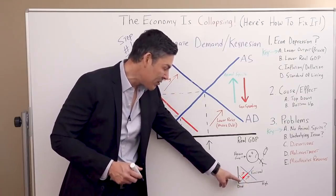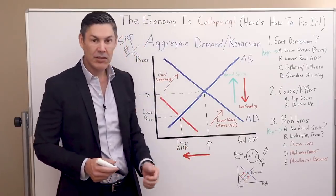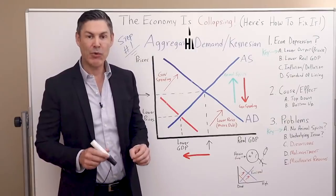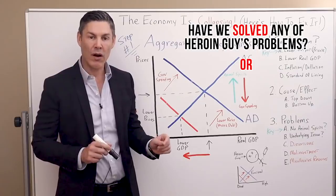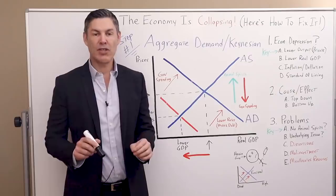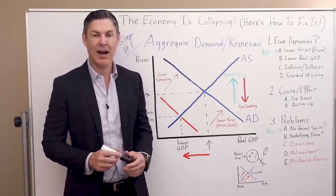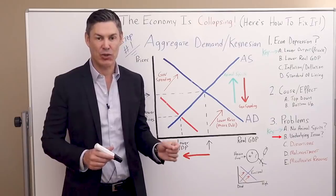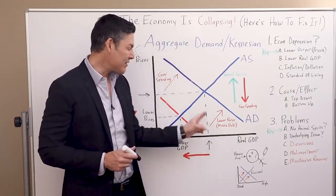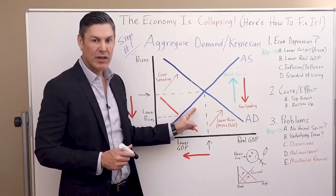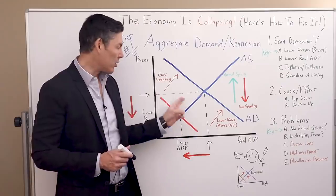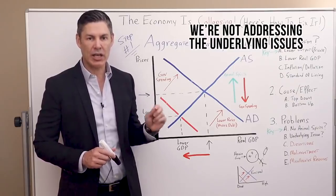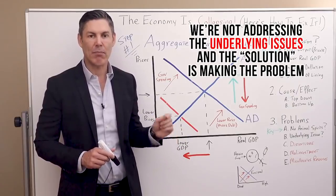So if he gets closer to being dead, the solution of course is just giving him more heroin, and that takes this line back up to where it used to be. Have we solved any of heroin guy's problems? Or have we just made it worse? Most of you watching would say of course we haven't solved any problems. Why not? Because we haven't addressed the underlying issues. So if it's this way with heroin guy, why isn't it the exact same thing with our economy — when instead of using a liquid form of heroin, we are using a monetary heroin? At the end of the day, it's the exact same problem. We're not addressing the underlying issues, and the solution is actually making the problem worse.